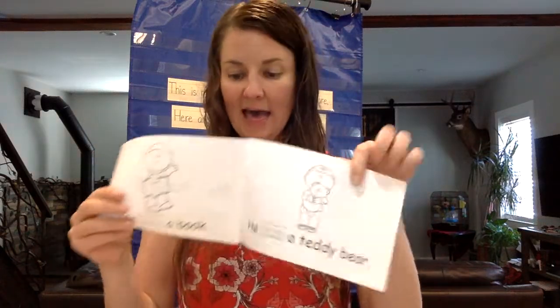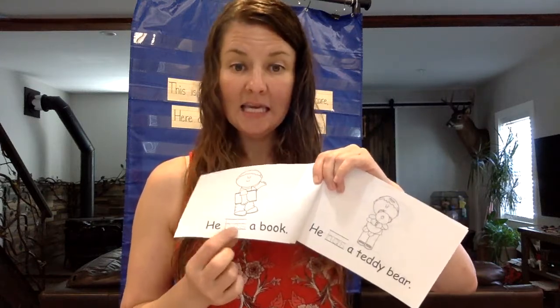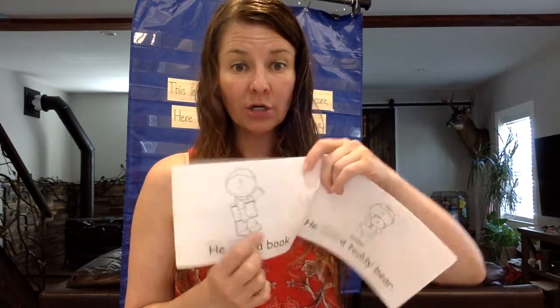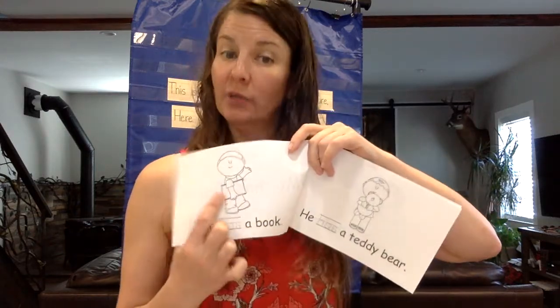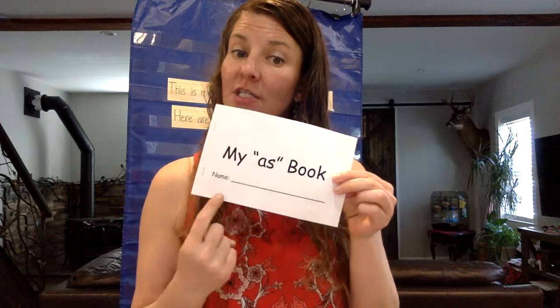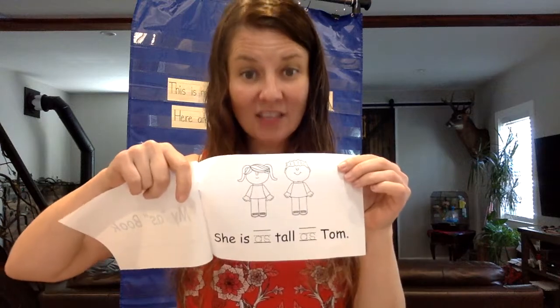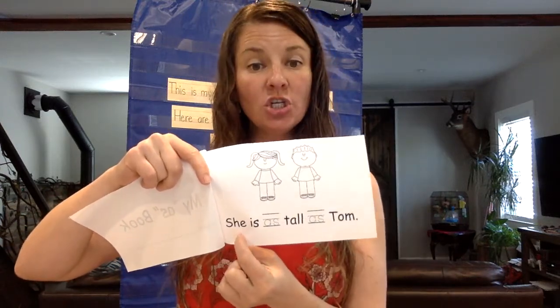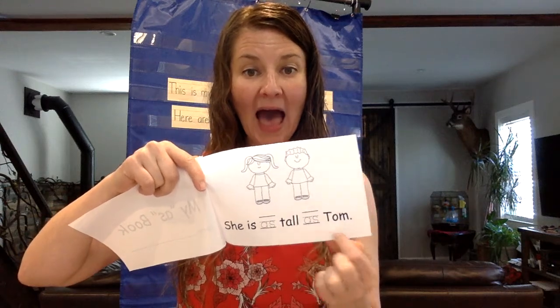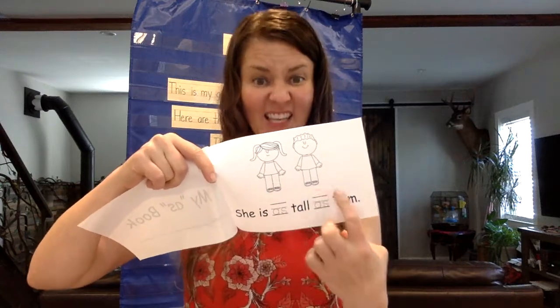In my 'has' book, first thing — name on your paper. You will trace all the H-A-S words in the story, then read it. Don't forget to point to those words. He has a book. In your 'as' book, you'll trace all the A-S words. She is as tall as Tom — there's she and there's Tom.